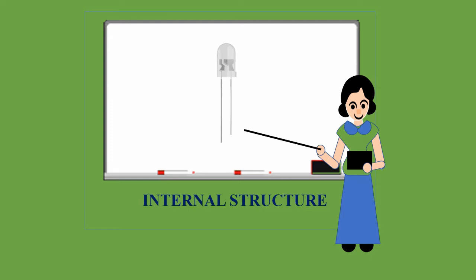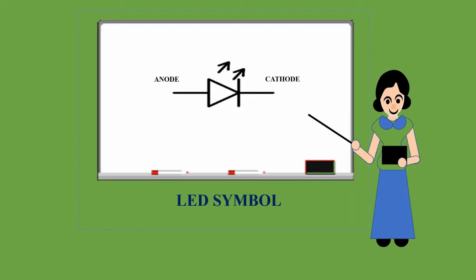It has two terminals: anode and cathode. The long terminal is the anode, which is the positive terminal, and the short is the cathode, which is the negative terminal. It has a hard plastic shell to protect the PN junction diode.